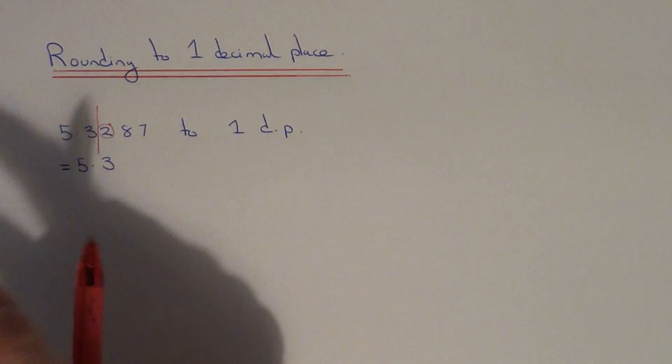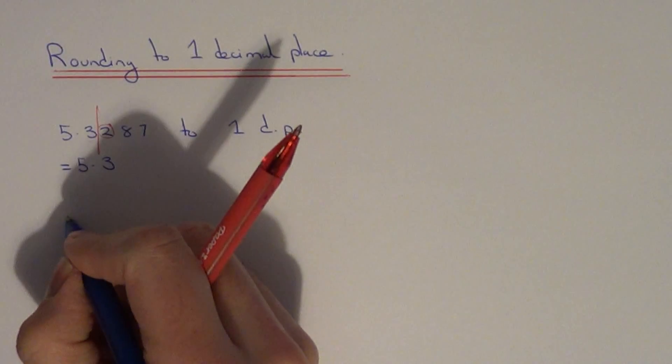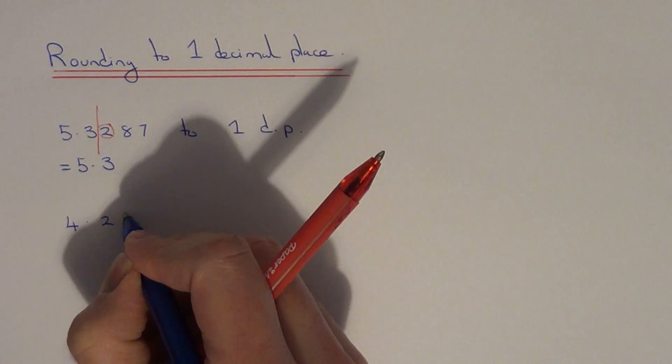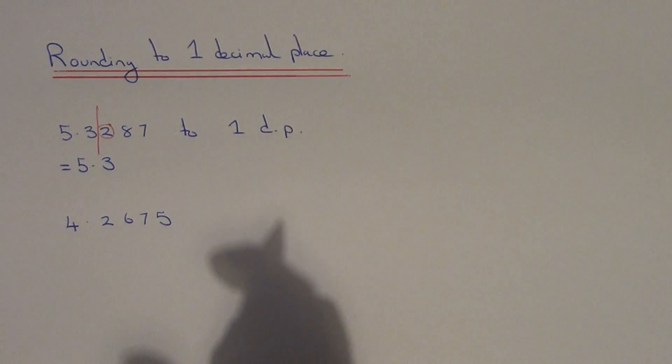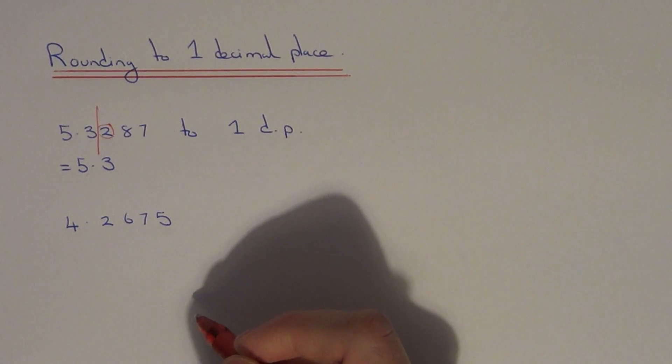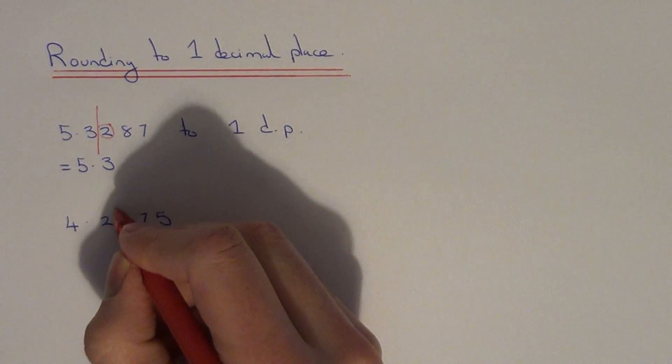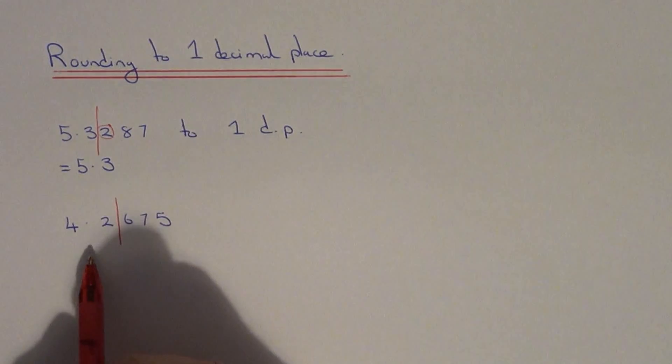Let's do another one. This time let's look at 4.2675. Again, one decimal place means we only want one number after the decimal point. Let's put a line in here. We're going to write down our answer as 4.2 or 4.3.